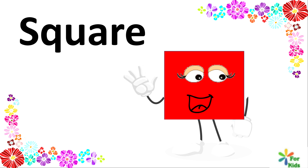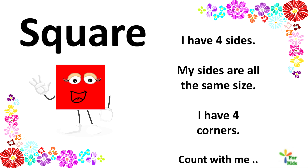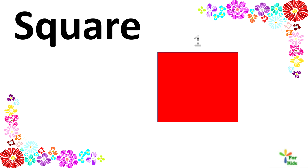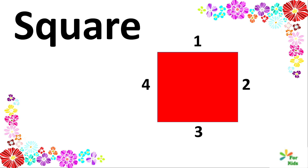Square. Say hi to square. I have four sides. My sides are all the same size. I have four corners. Count with me. One, two, three, four. Square. Say it with me. Square.